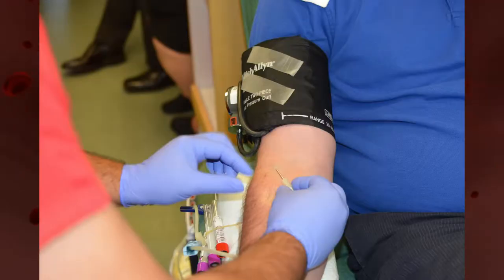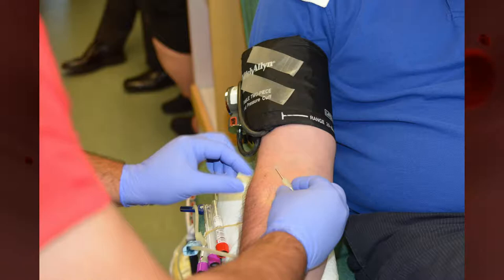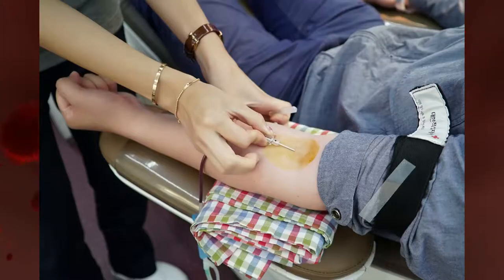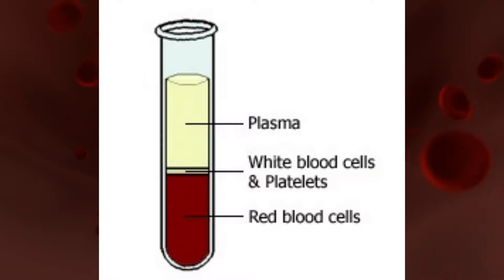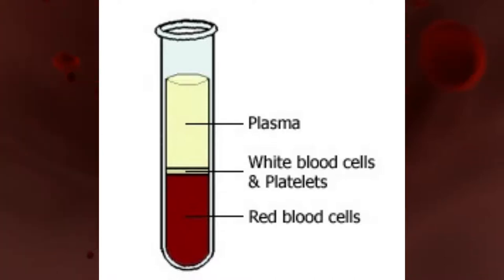First, you are set up as per normal with a blood donation. The only difference is that they use a slightly larger and differently designed catheter. The catheter in the vein begins by taking out the whole blood, which enters a centrifuge rather than a donation blood bag. In the centrifuge, the whole blood is spun, which forces the erythrocytes, leukocytes and plasma to separate. The plasma is then drawn off and put into the plasma bag.